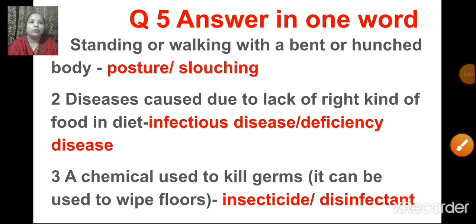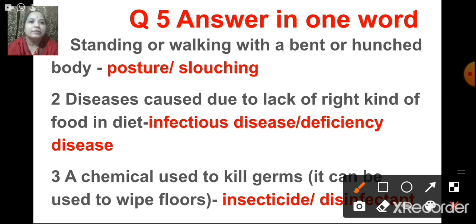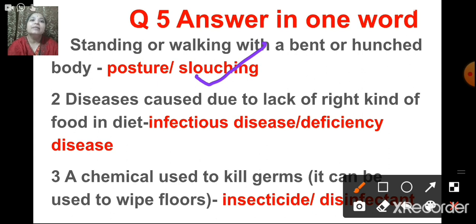The next question is answer in one word. When you are solving this in the exam, you have to click on the correct answer. The first one: standing or walking with a bent or hunched body — what is it called? That is called slouching. Posture is the position in which you walk, stand, or sit. When somebody walks, sits, or stands with a bent or hunched body, that is called slouching.